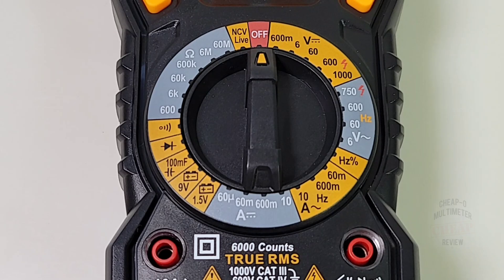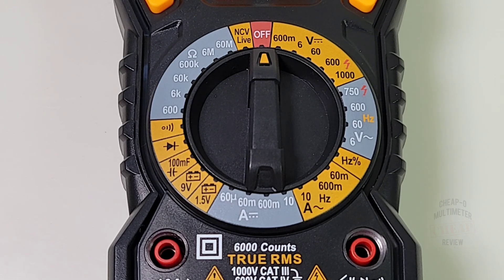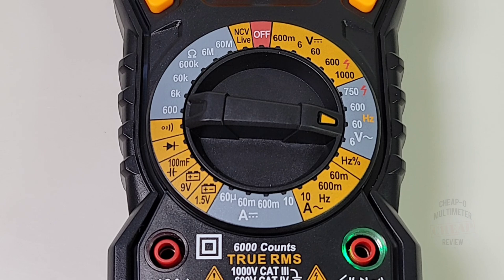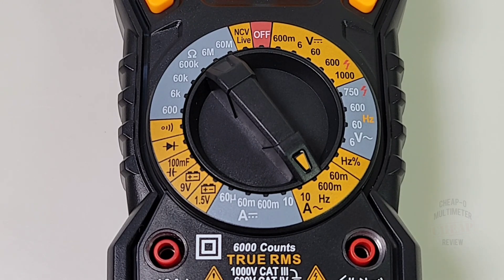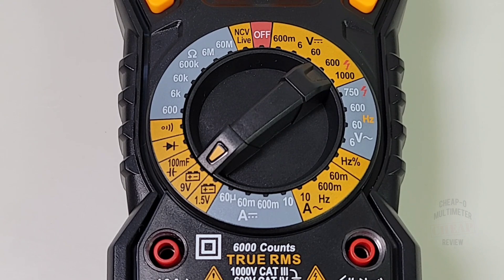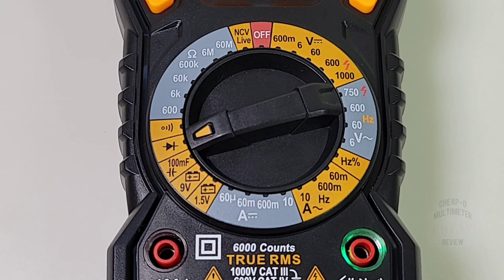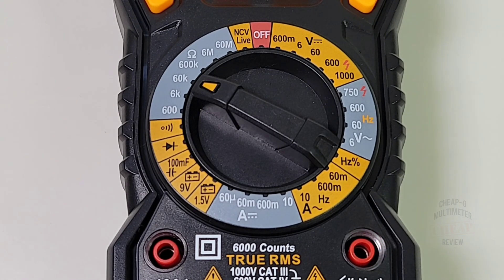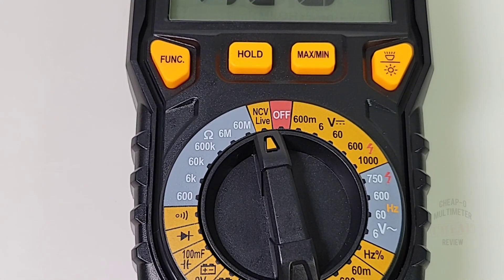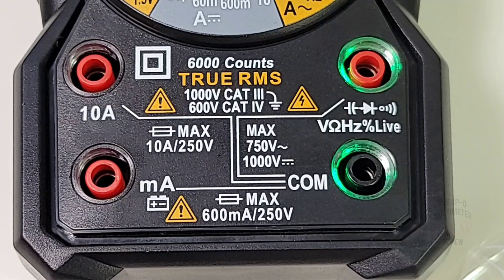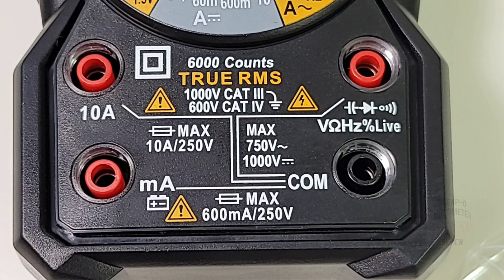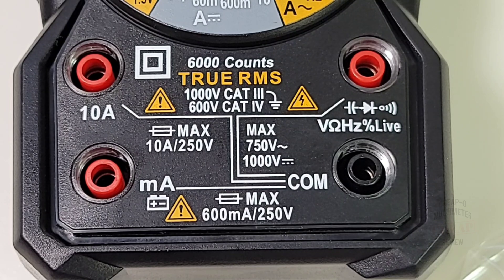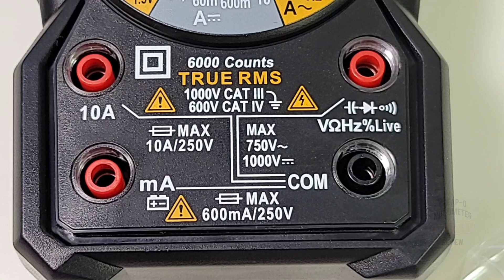Groovy. Let's take a closer look at the selector switch starting at the midnight or off position. Volts DC up to 1000 volts. Volts AC up to 750 including frequency. Frequency and duty cycle. AC amps up to 10 amps. DC amps up to 10 amps. Battery tester, 9 volt and 1.5 volt. Capacitance up to 100 millifarad. Diode test. Continuity. Resistance up to 60 megaohm. Non-contact voltage and live detect. Top left of the meter, we're starting off with the function switch, followed by the hold, max min, and finally the flashlight backlight. On the meter, you can see we have our LED illuminated jack inputs.